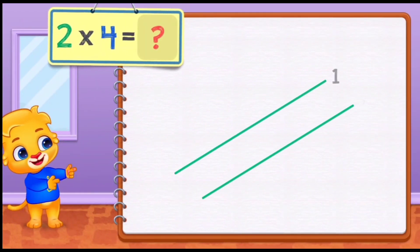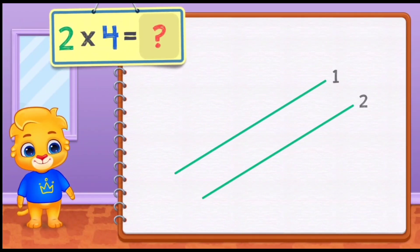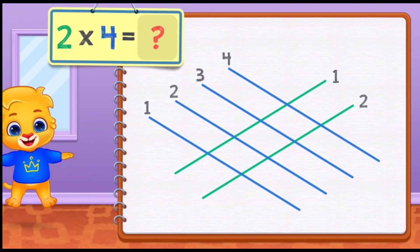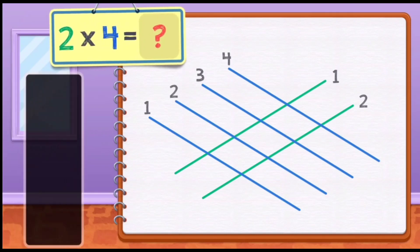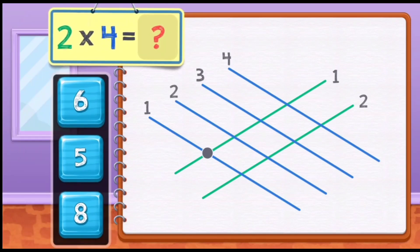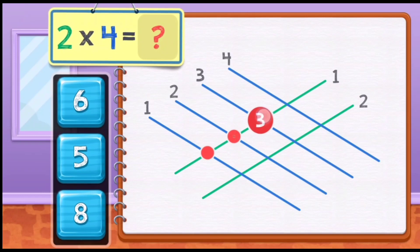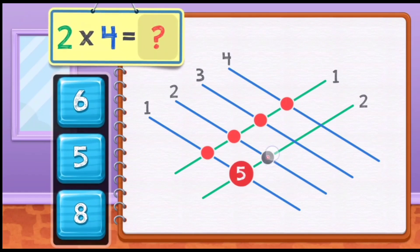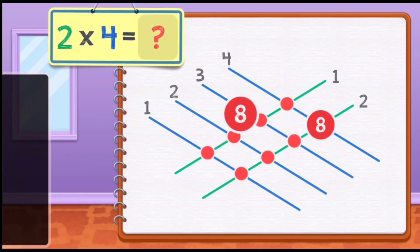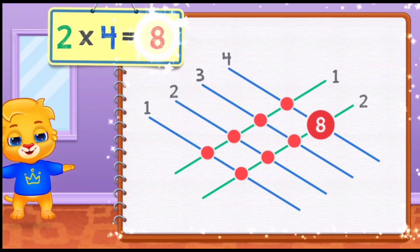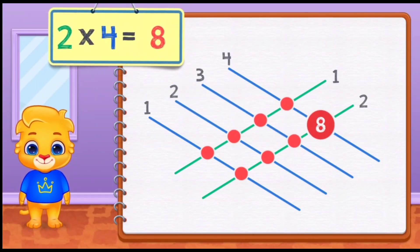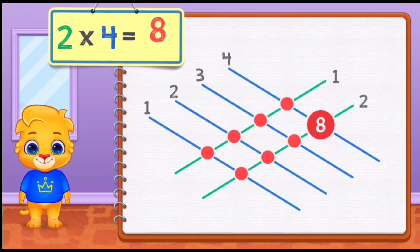2 times 4 equals... 1, 2, 3, 4, 5, 6, 7. Two times four equals eight.